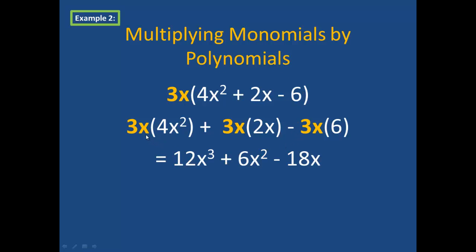When I simplify, I will have 3 times 4 gives me 12x cubed plus 3 times 2 gives me 6x squared minus 3 times 6 is 18x. Once again, this is as simplified as it gets.